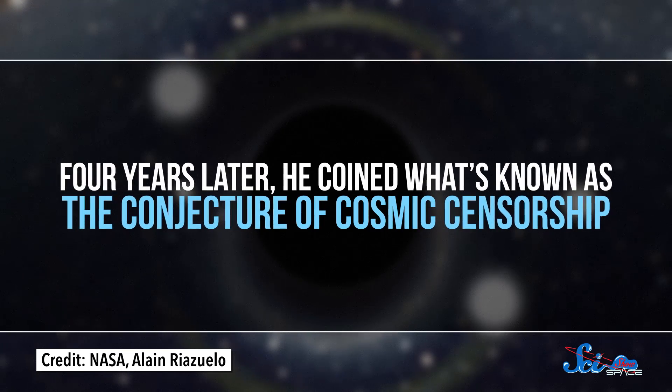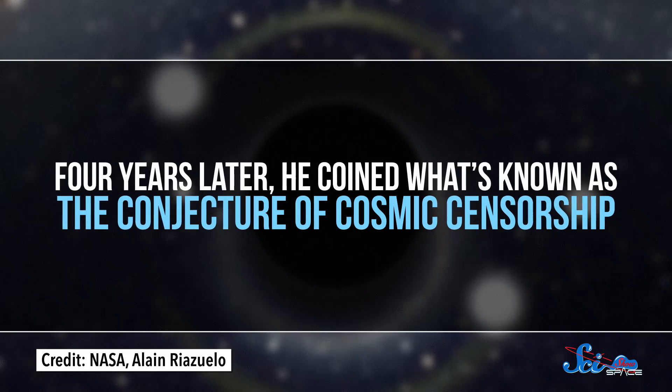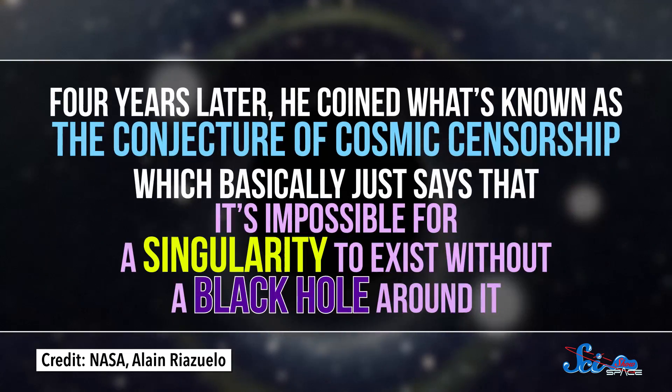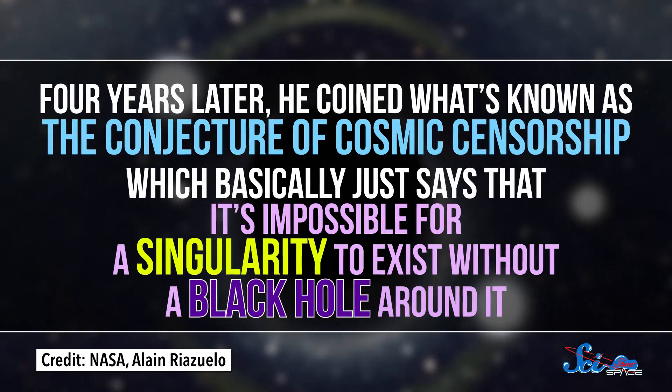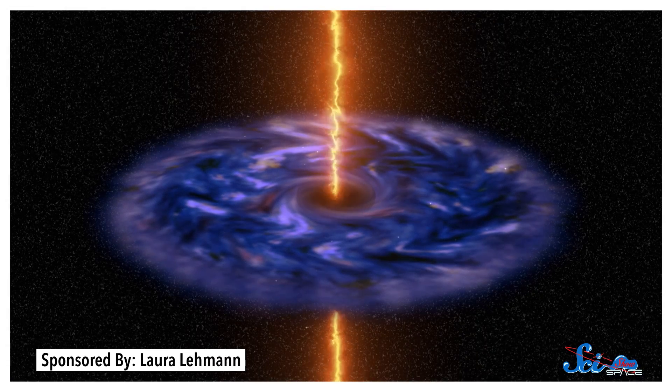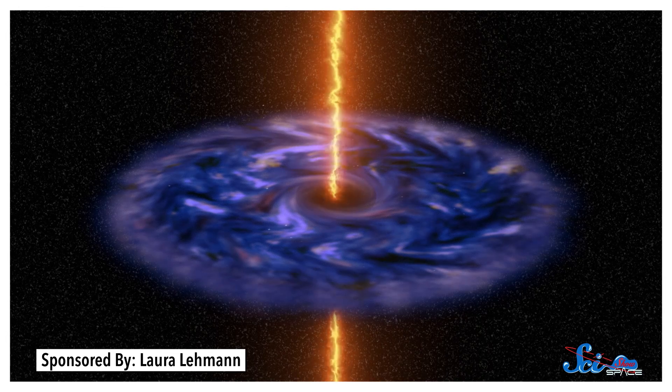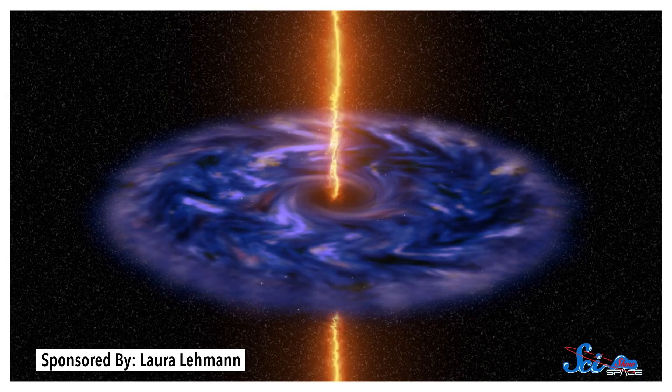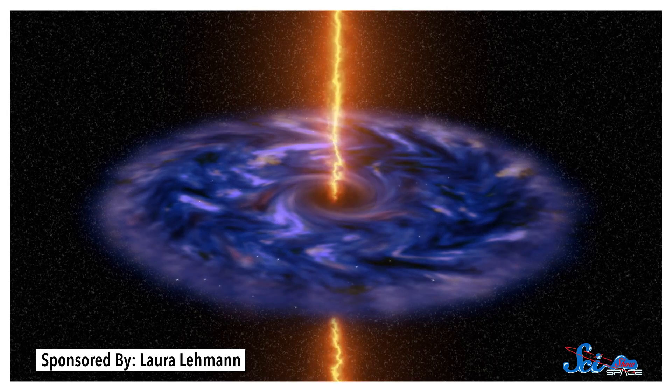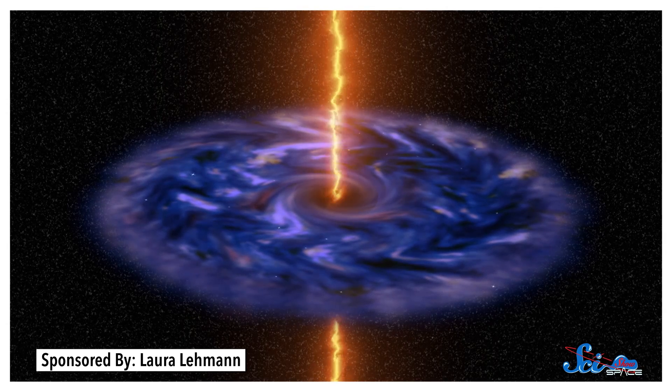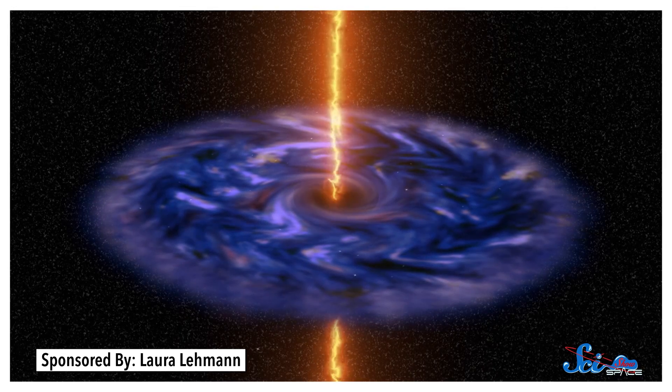Four years later, he coined what's known as the Conjecture of Cosmic Censorship, which basically just says that it's impossible for a singularity to exist without a black hole around it. Again, he couldn't prove it, it was just a conjecture. But it was really hard to imagine how an infinitely dense point could exist without a black hole around it. And all these decades later, many astrophysicists still subscribe to cosmic censorship. But not all of them.